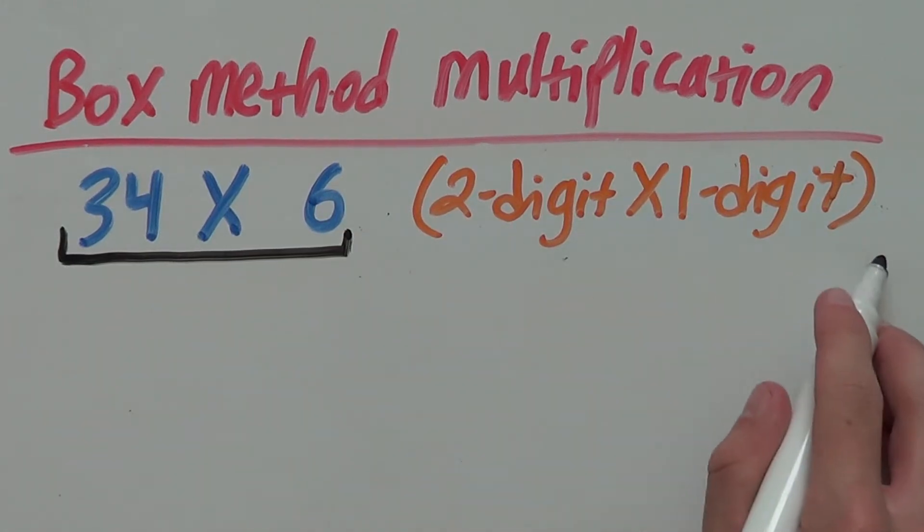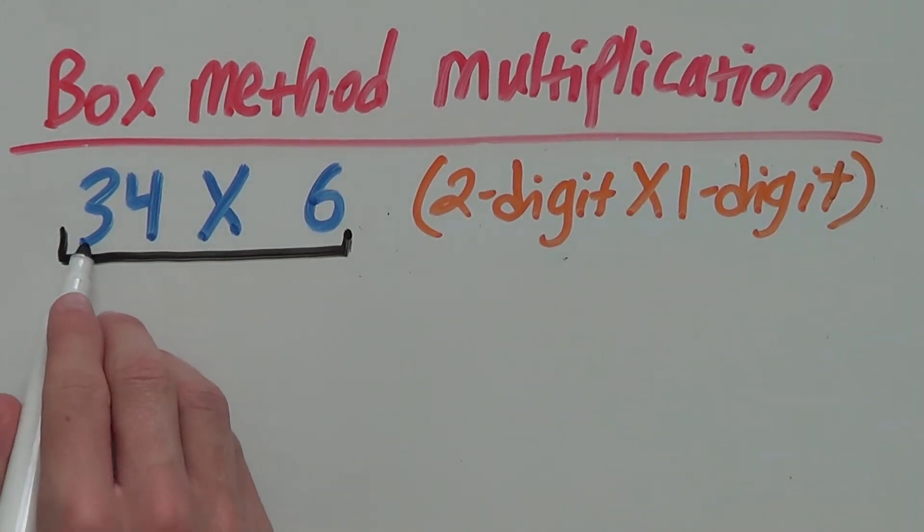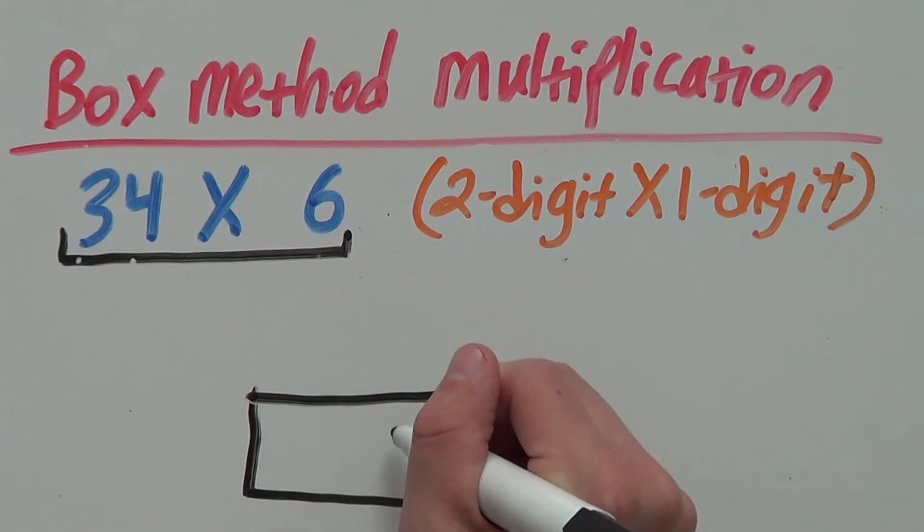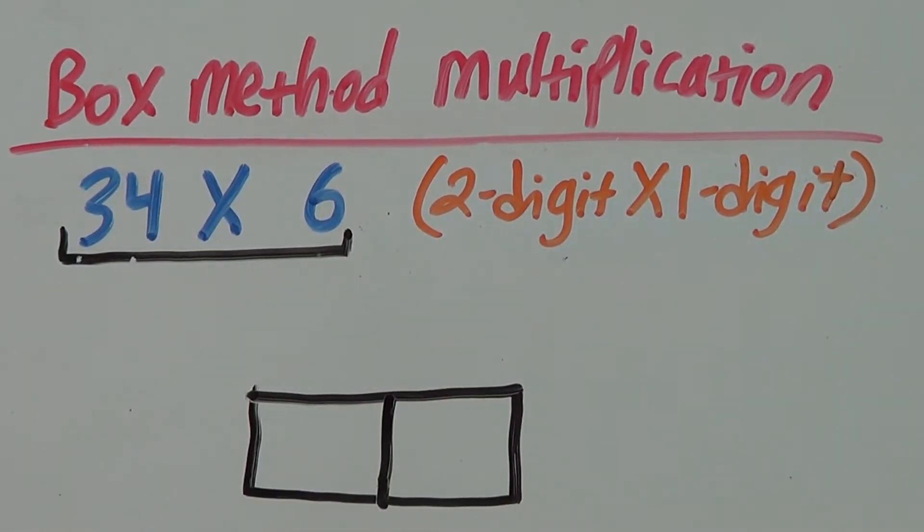This is a 2 by 1 digit box because our first number is 2 digits and our second number is 1 digit. We can draw our box out like this. We have 2 boxes by 1 box.